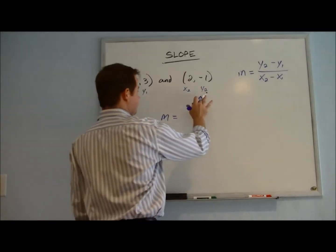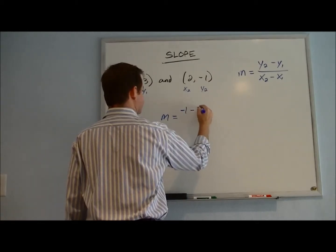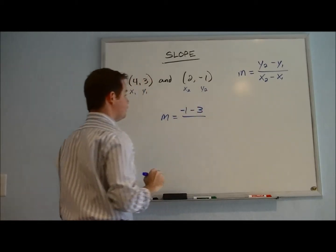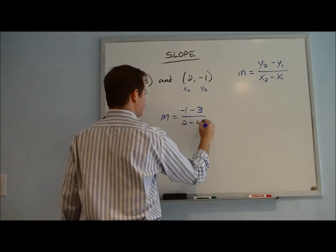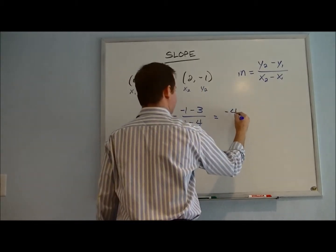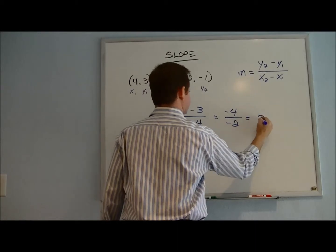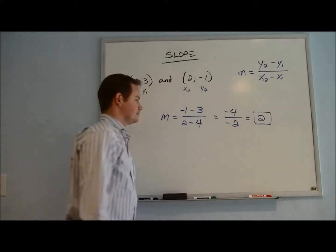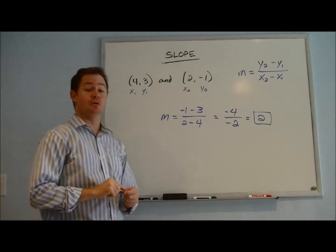So here, y2 minus y1, so that'd be negative 1 minus 3, over x2, which is 2, minus 4, will give us a negative 4 divided by a negative 2, which is a positive 2, and that would be the value of slope between these two coordinates.